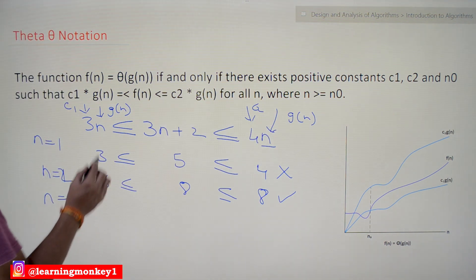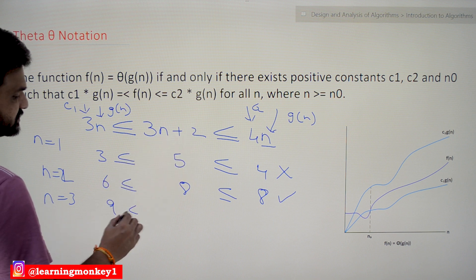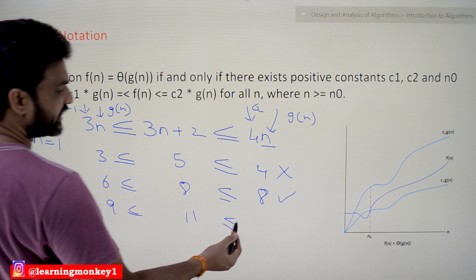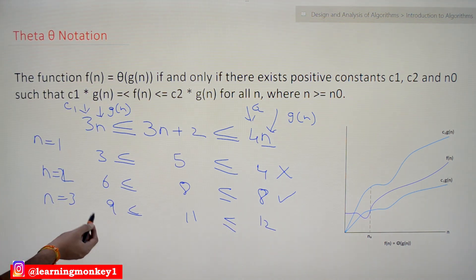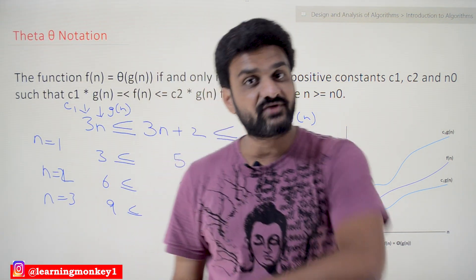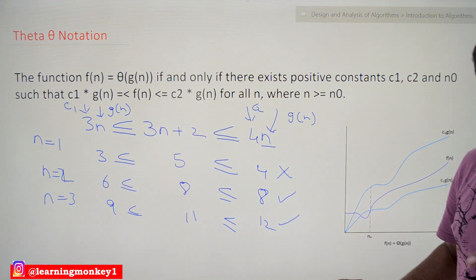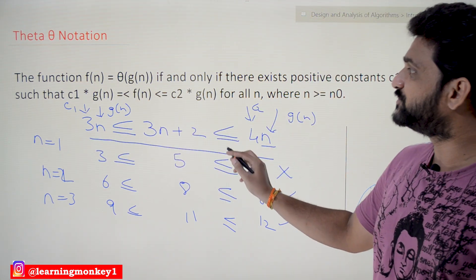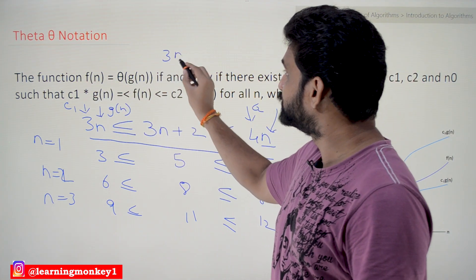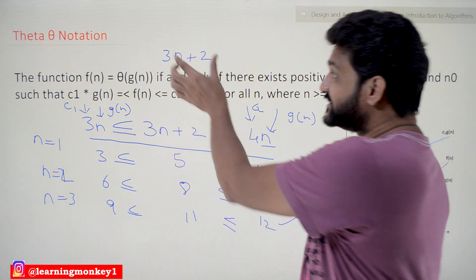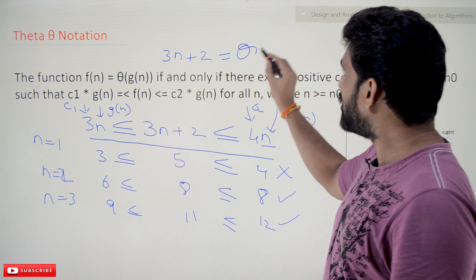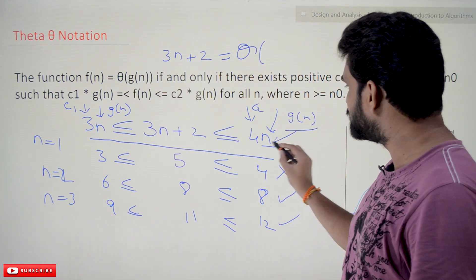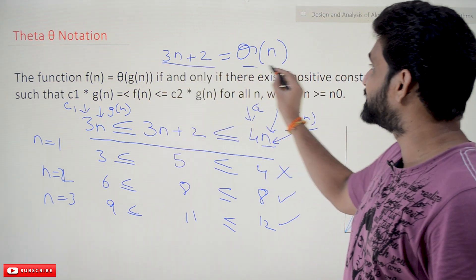Let's check for n equal to 3: f of n gives 3×3 plus 2 equals 11, c1·g(n) is 9, c2·g(n) is 4×3 equals 12. Is 11 greater than or equal to 9? Yes. Is 11 less than or equal to 12? Yes, it is true. So for all values of n greater than or equal to 2, this holds. So we can say that 3n plus 2 can be expressed as theta of n.